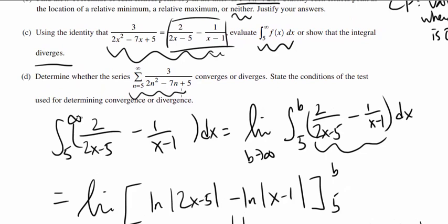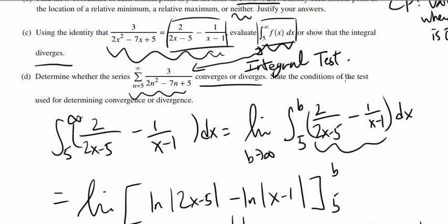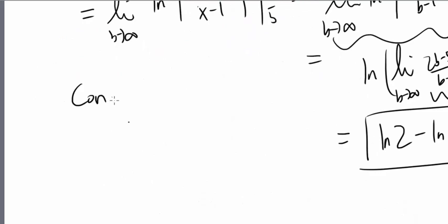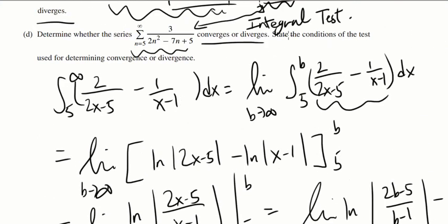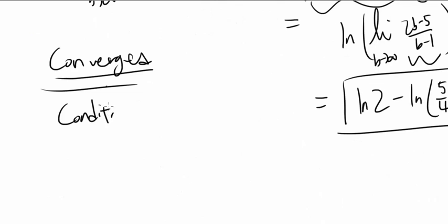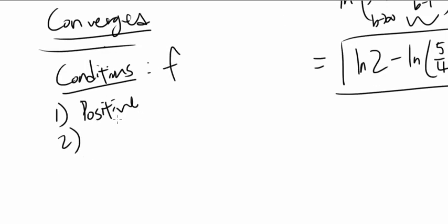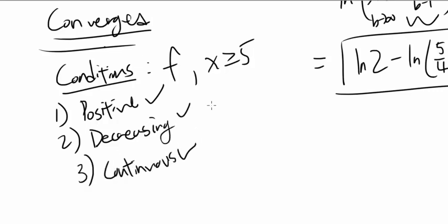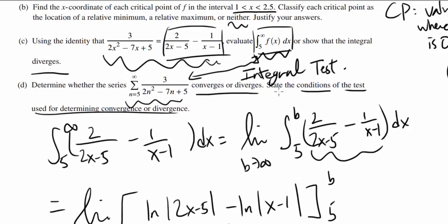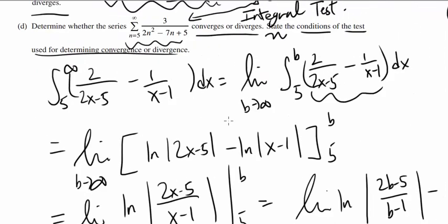Now let's get part D. Determine whether the series... the series corresponds to the integral, so they're looking at integral test. We have integral test for the series, converges or diverges. We know this integral is converging, so the corresponding series has to converge. The answer is converges. But what else do they want us to do? State the conditions of the test used for determining convergence or divergence. Conditions are easy. Function f has to be positive for values greater than or equal to 5. It has to be decreasing and it has to be continuous. They did not ask us to verify the conditions, just to state them. That should be it for question number 5.